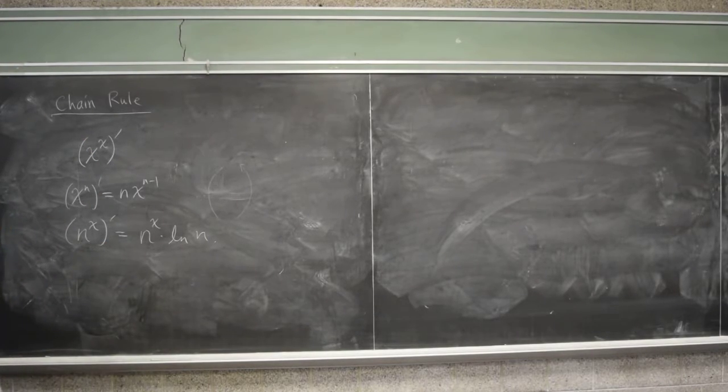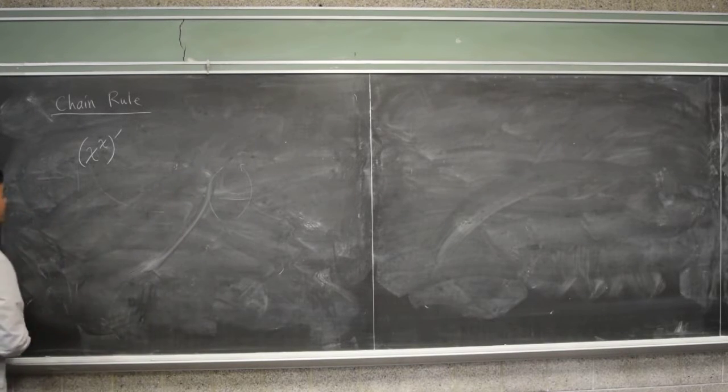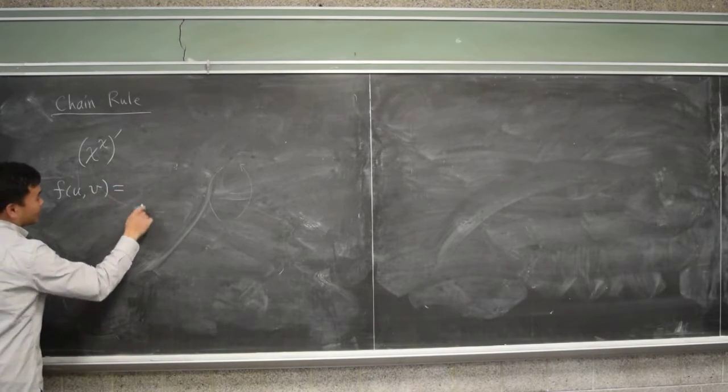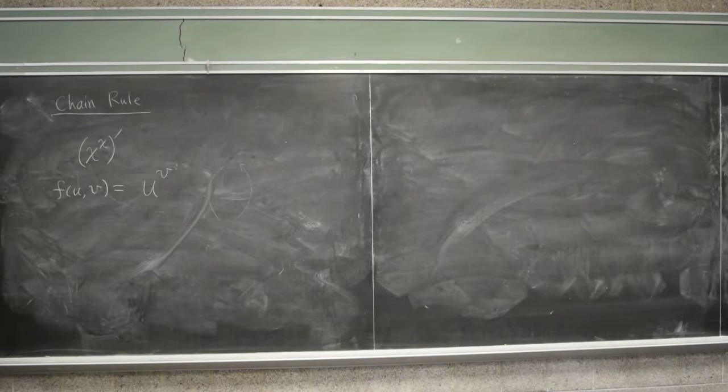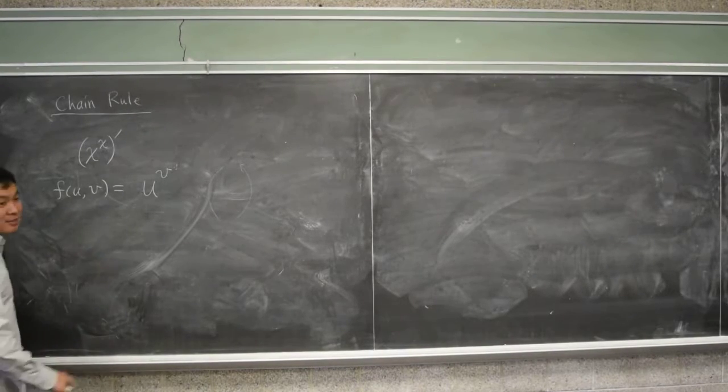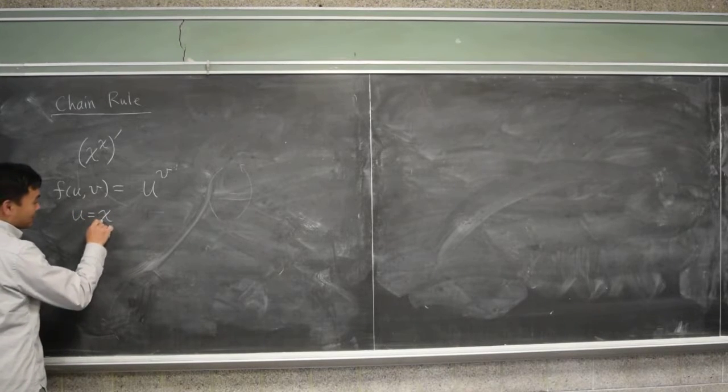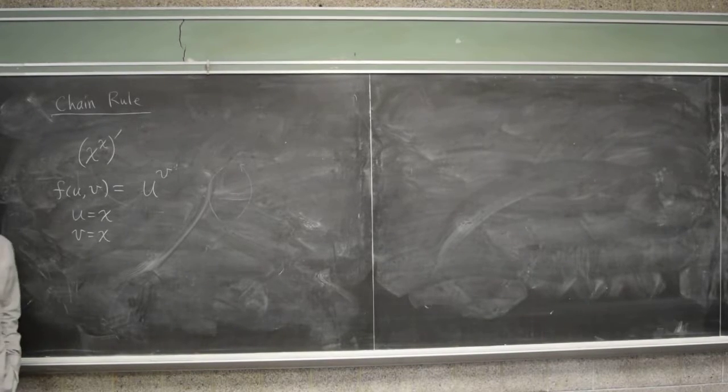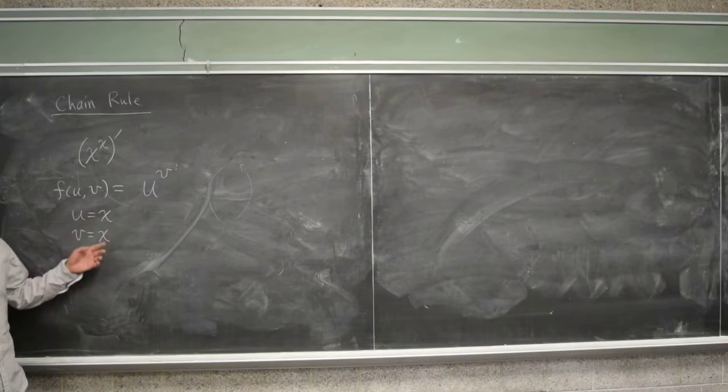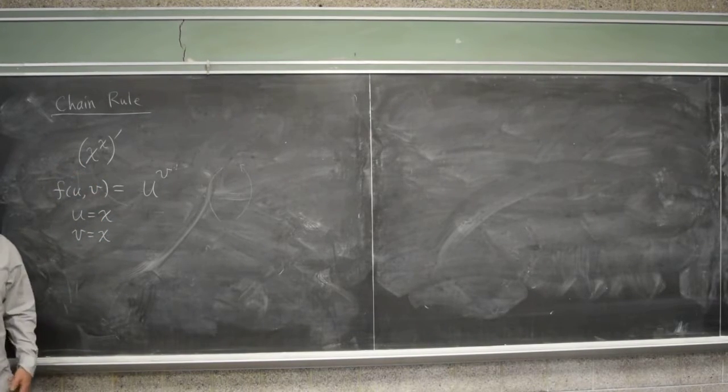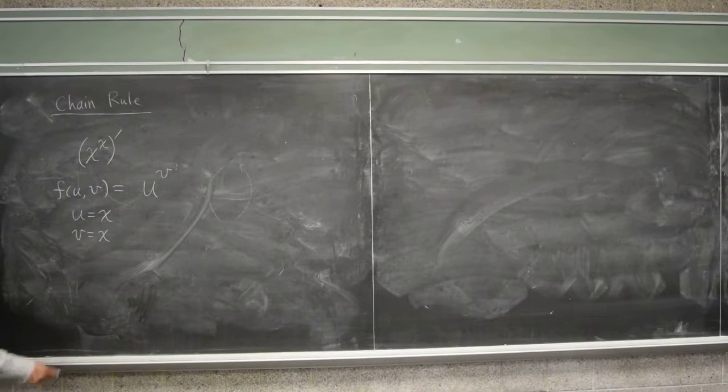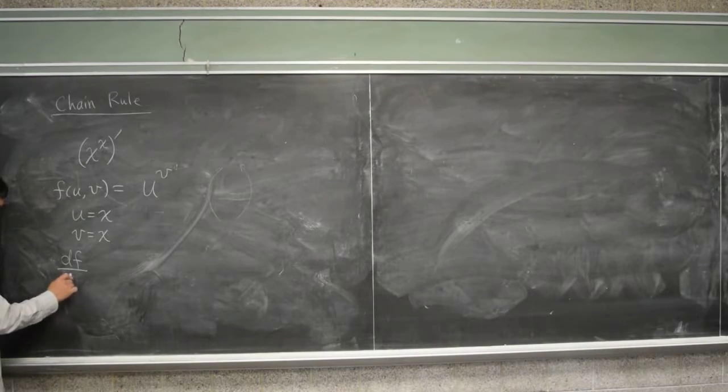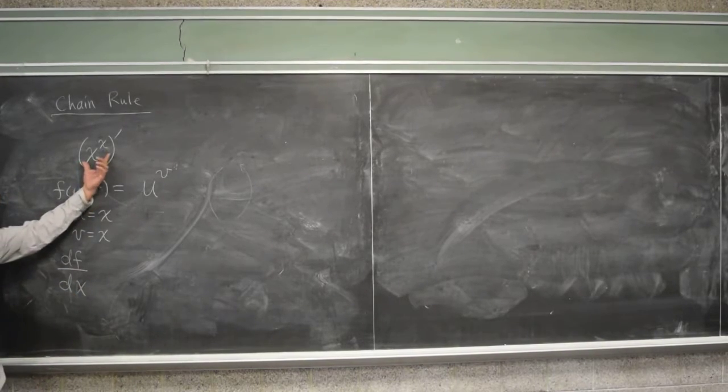Here's a Calc 3 approach. First, set f of u, v as u to the v-th power. And then I set u as x and v as x. You kind of see why I'm doing this, right? That means f as a function of x is x to the x power. So in order to answer this, what are we trying to find? How f changes when you change x, because this is like differentiating by x.